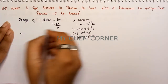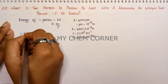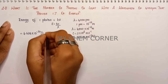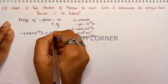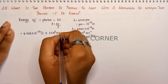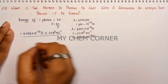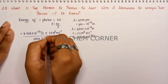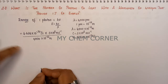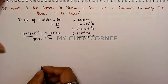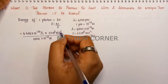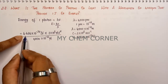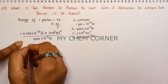Substituting into the formula: h = 6.626 × 10⁻³⁴ J·s, multiplied by c = 3 × 10⁸ m/s, divided by lambda = 4000 × 10⁻¹² m. The meter units cancel and the seconds cancel, leaving us to simplify 6.626 × 3 divided by 4000.